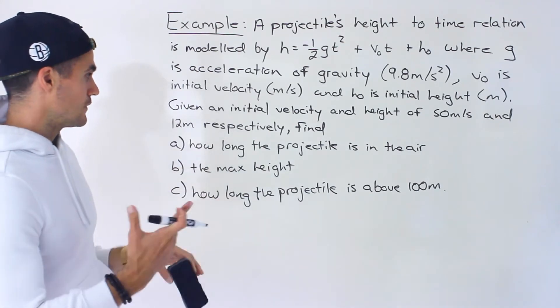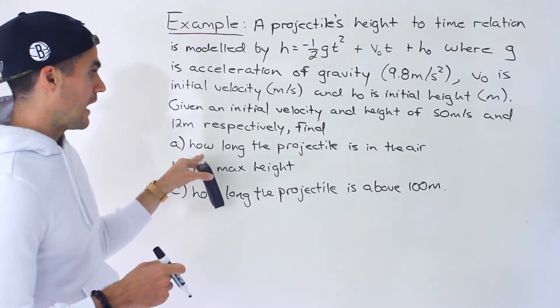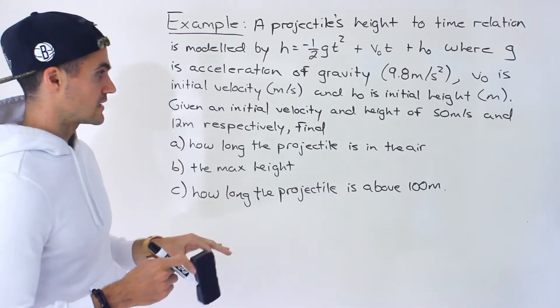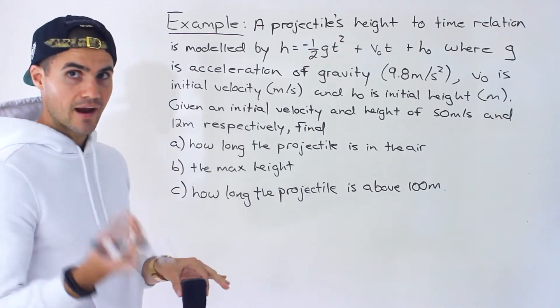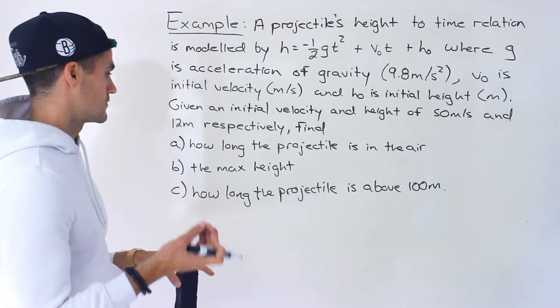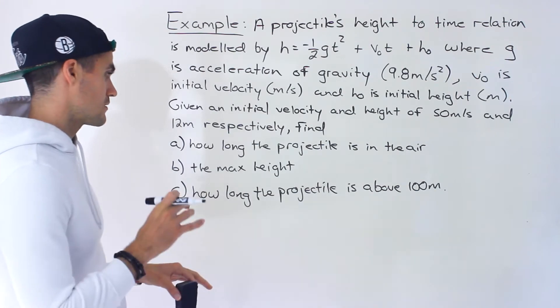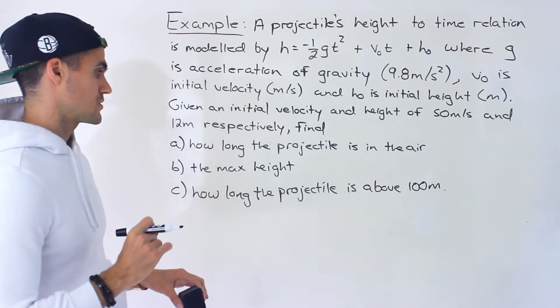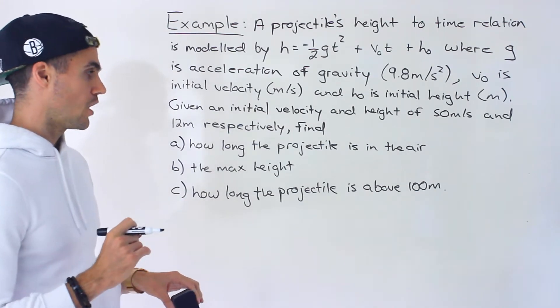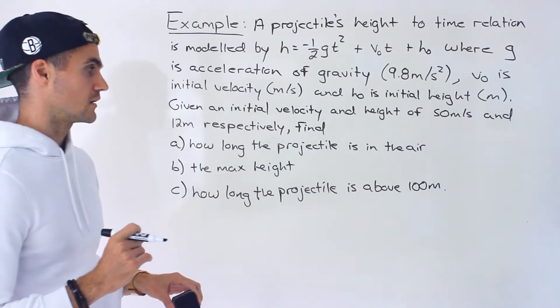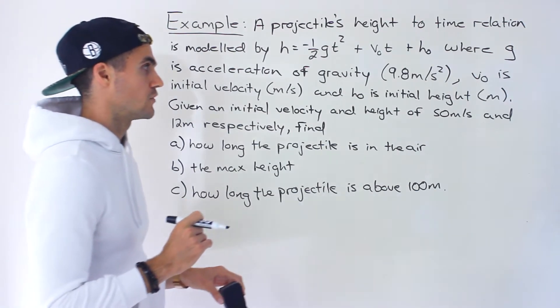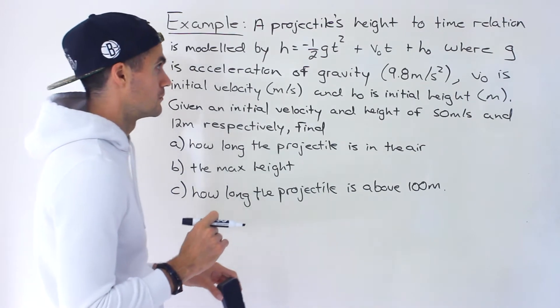Given those values, we have to find: part a, how long the projectile is in the air; part b, the maximum height; and part c, how long the projectile is above 100 meters.